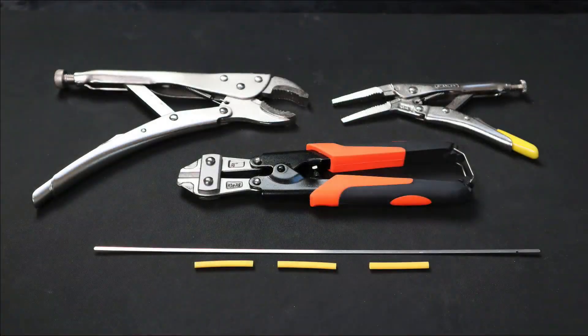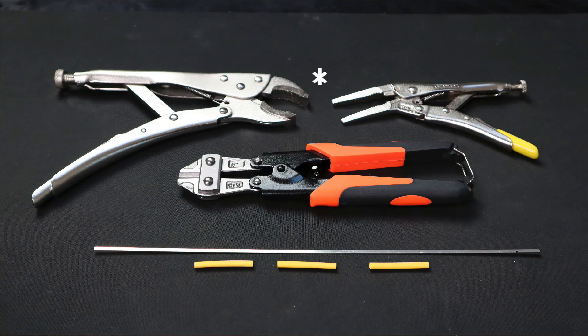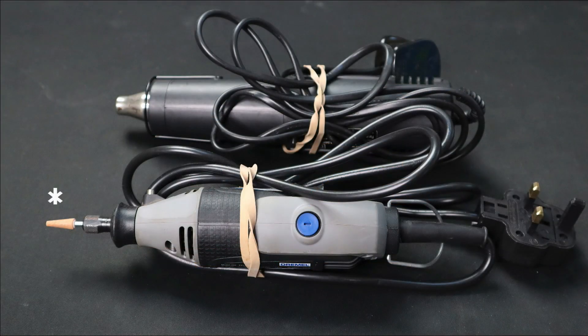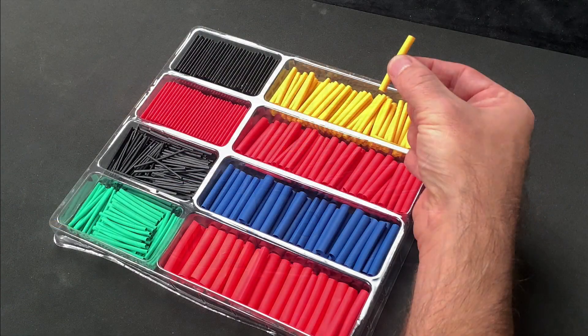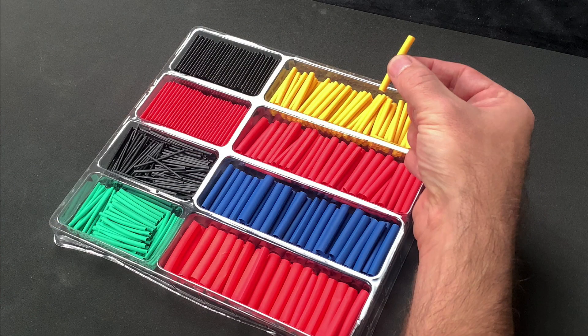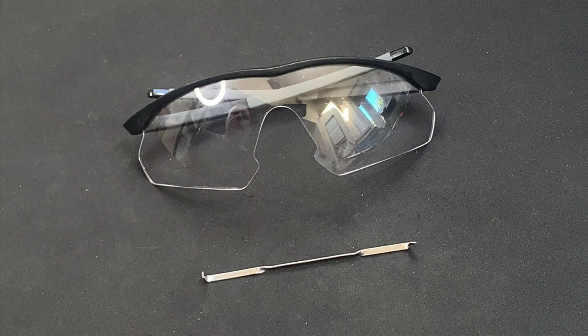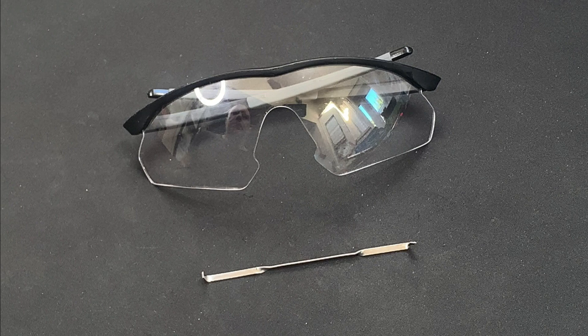You're also going to need two pairs of locking pliers, a heavy duty pair of metal cutters, a dremel with an aluminum oxide grinding stone attachment, some narrow gauge heat shrink and a heat source. In this case I have a crafter's heat gun. Finally I'd recommend a pair of safety goggles just in case.